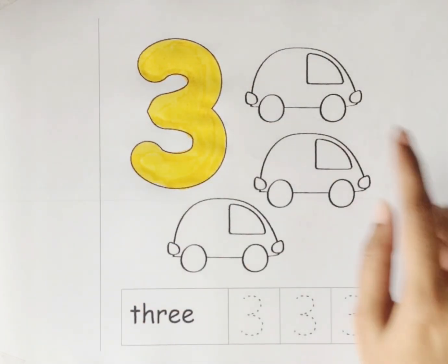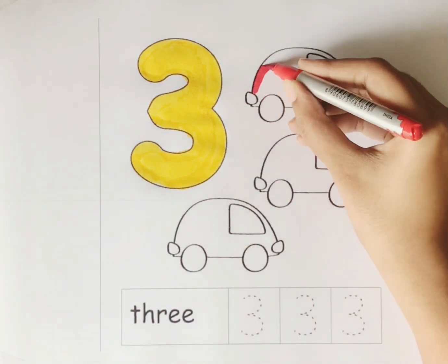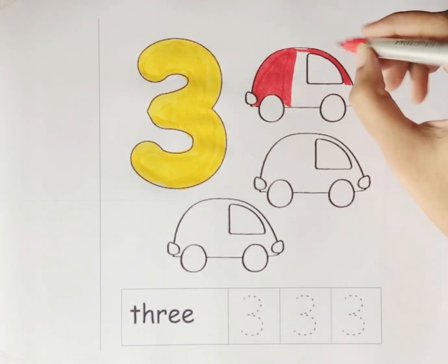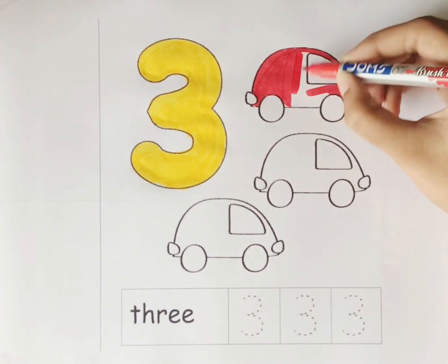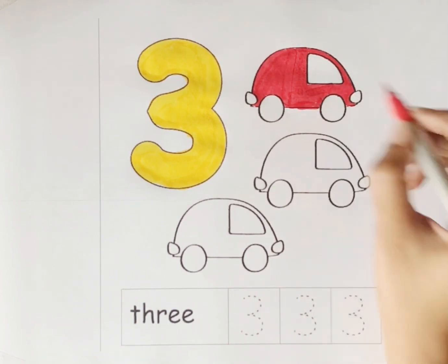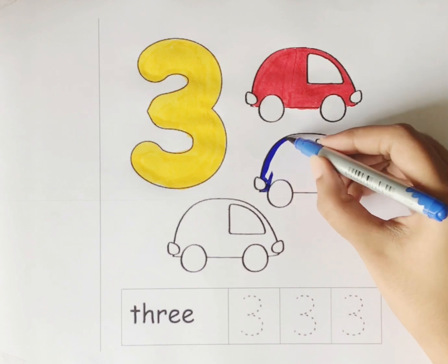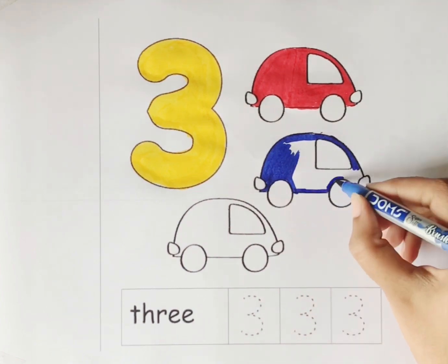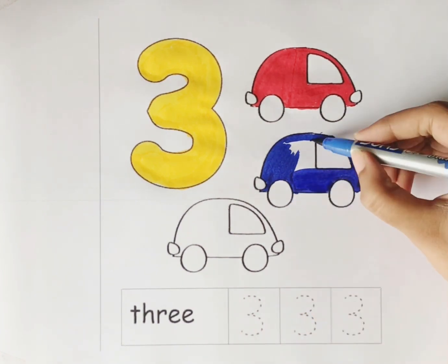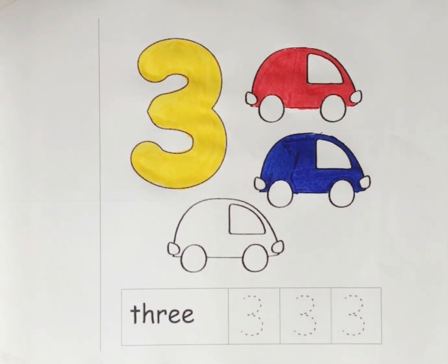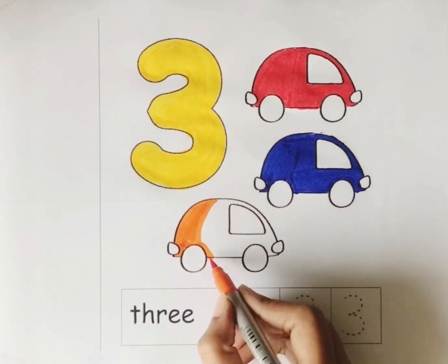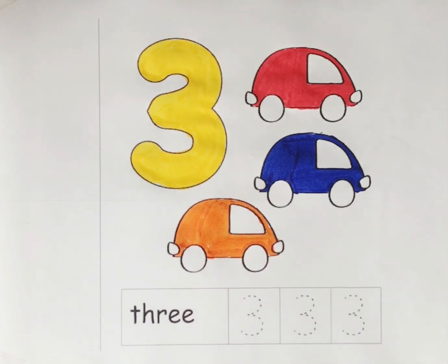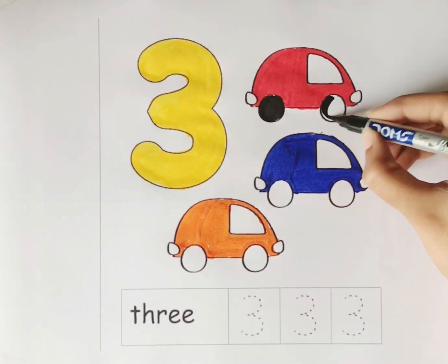Let's count the total number of cars. We have 1, 2, 3. We have total 3 cars. Red color. Blue color. Orange color. Black color.